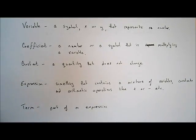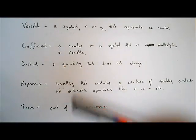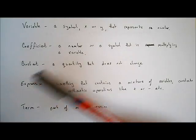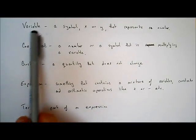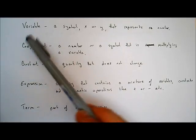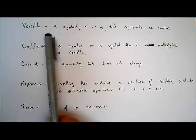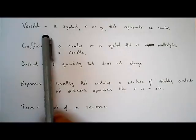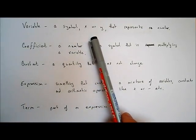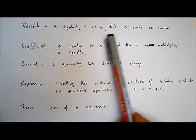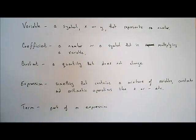Before we get into algebra, we want to have a look at a few definitions that you're going to need. You should start to try and use these words when talking about different things in algebra, expressions or equations. The first definition is a variable. You probably know some of these already. A variable is a symbol, usually x or y, but it could be a or b or anything really, that represents a number.